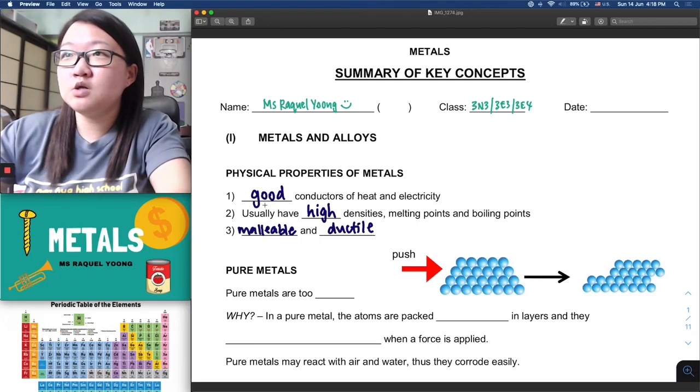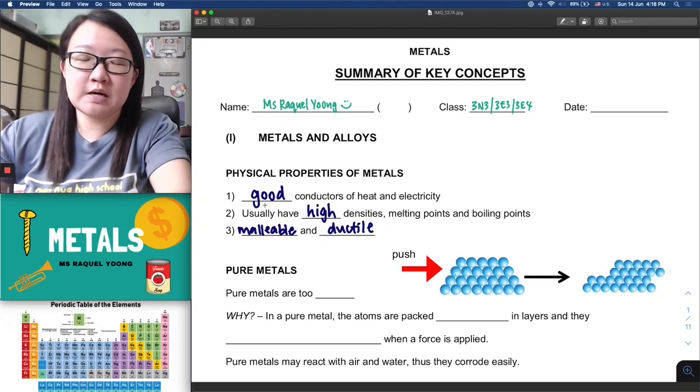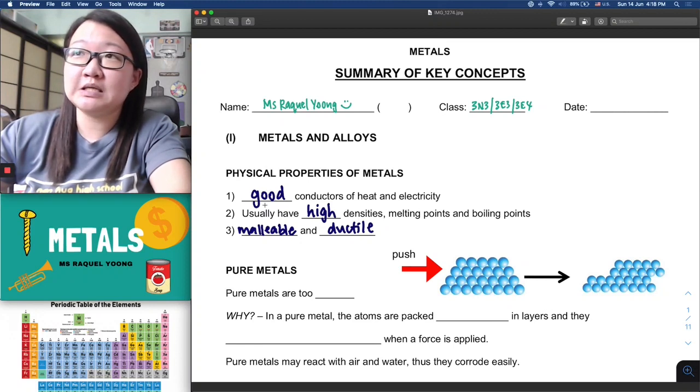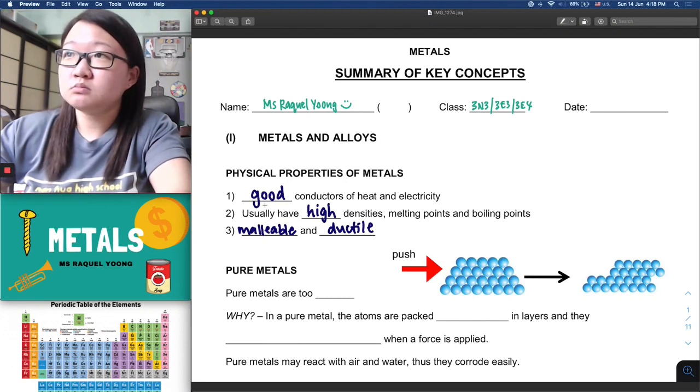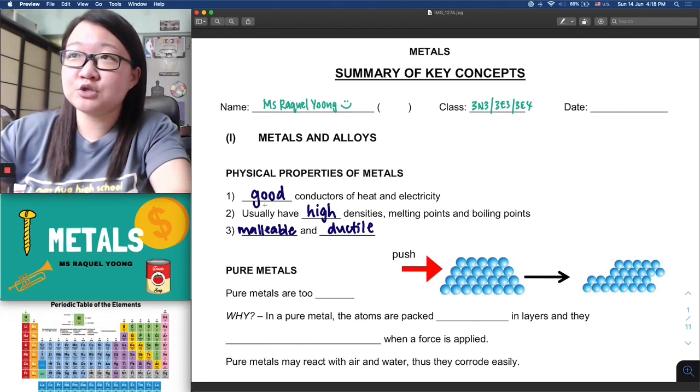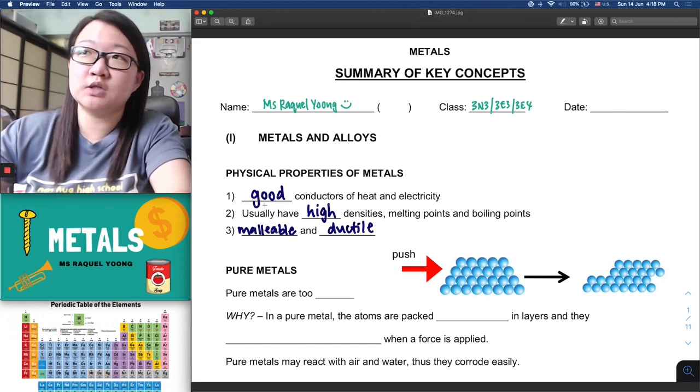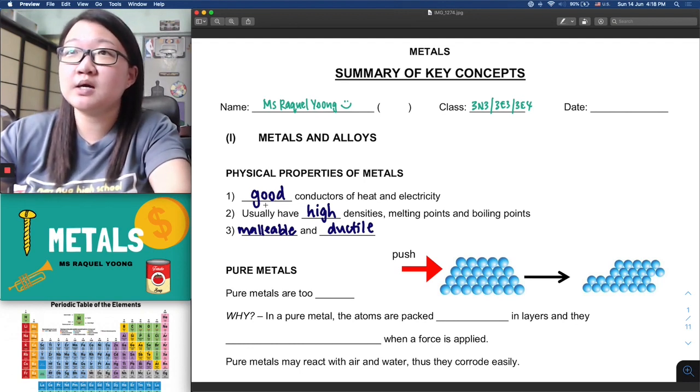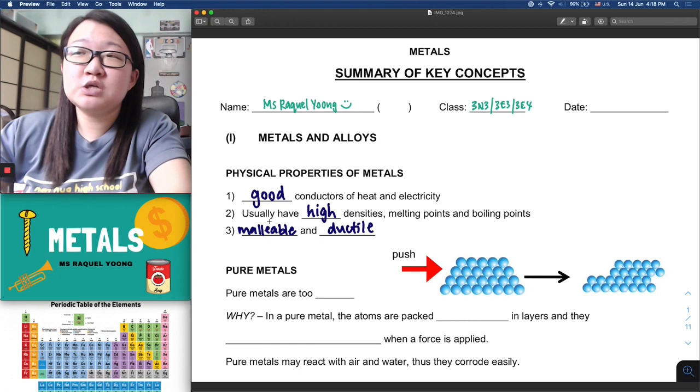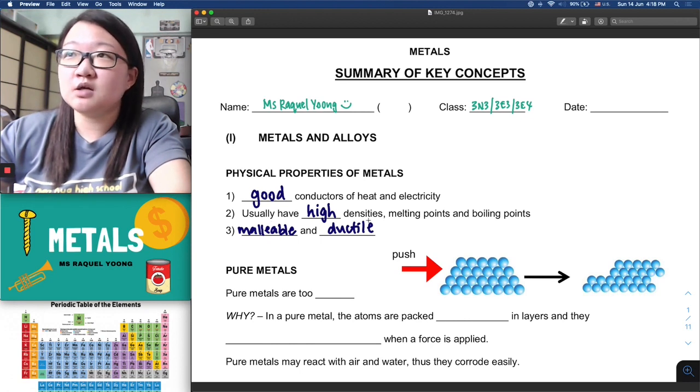Let us do some recap on the physical properties of metals. Number one, they are good conductors of heat and electricity. For instance, a very common example of a metal that we see in daily life would be copper. Copper is used in our wires and found in a lot of electrical appliances, so they have to be good conductors otherwise they cannot be used for that purpose.